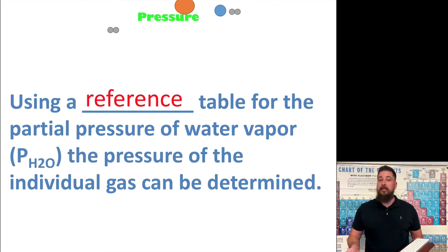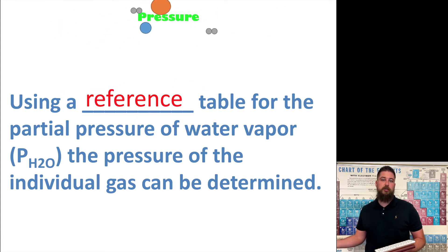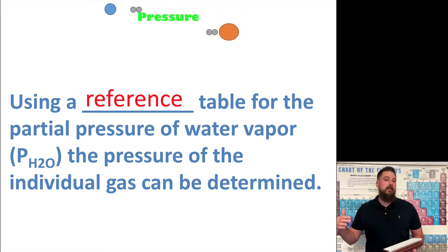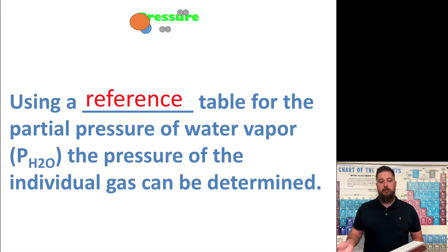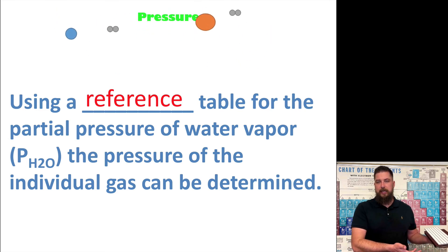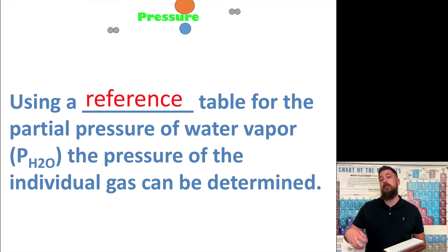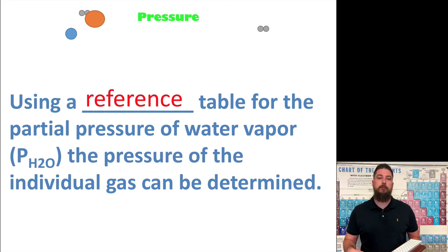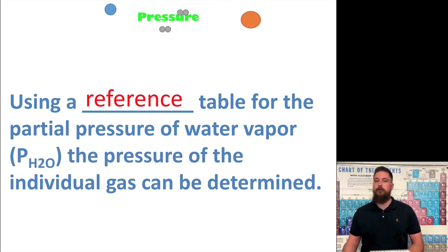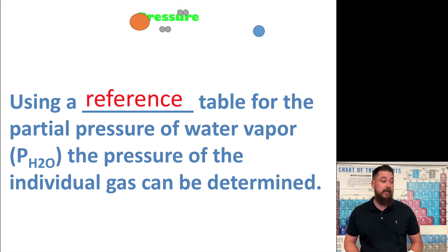The way you do that is by using a reference table that tells you what the partial pressure of the water is going to be. Water will have a specific partial pressure at a given temperature. So you look at the reference chart, which tells you the partial pressure of the water at the temperature you're collecting the gas at. Then you use the total pressure of both gases and work backwards to figure out the partial pressure of the oxygen gas. We'll go through some practice problems where we actually do this.